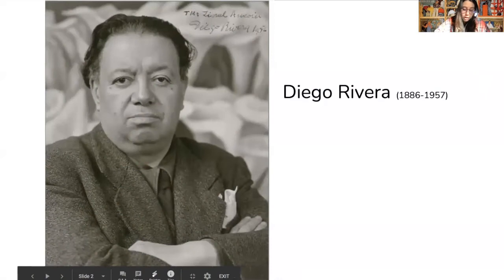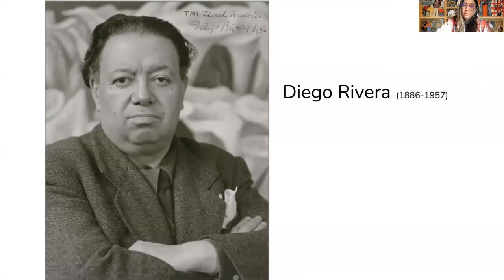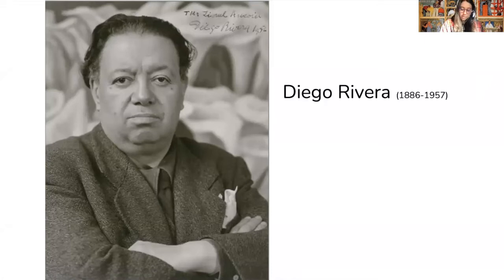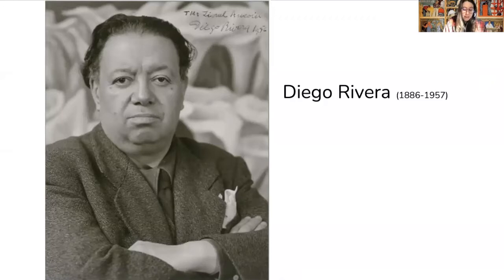Diego Rivera was born in Guanajuato, Mexico in 1886 and died in 1957. When he showed art talent at an early age, his parents gave him a room in the house and let him paint on the walls. He studied at the San Carlos Academy of Fine Arts in Mexico City and traveled to Europe to continue learning about art. There, he met Pablo Picasso and became a Cubist painter. He also visited Italy and saw many frescoes from the Renaissance period. Back in Mexico, he started making paintings in public spaces like the frescoes he saw in Italy.